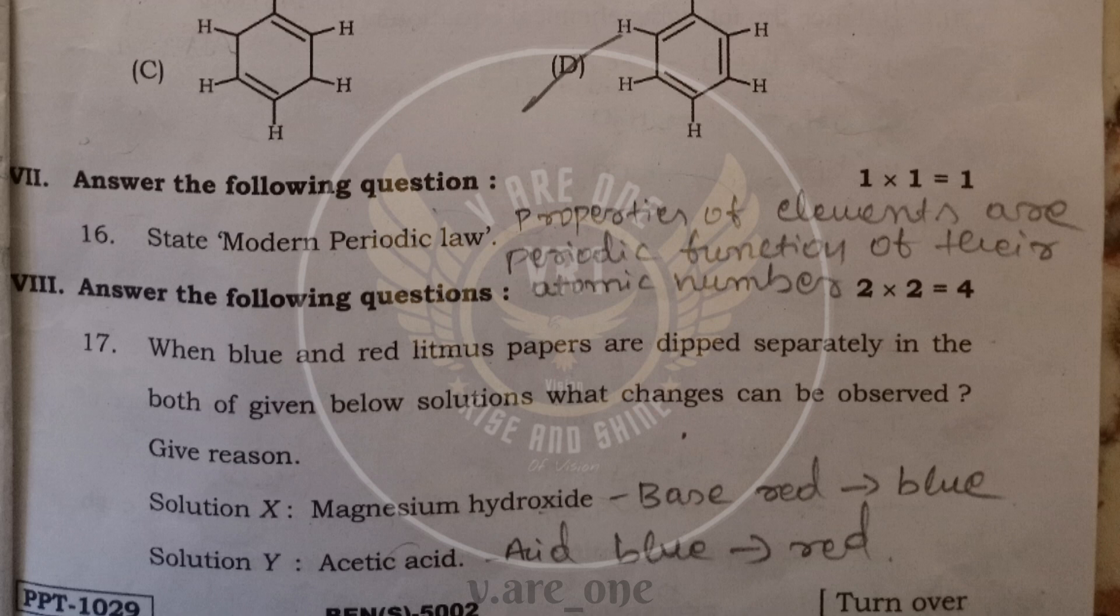In the 7th main, answer the following question. 16th question is, state modern periodic law. Modern periodic law is, the properties of elements are periodic functions of their atomic number.